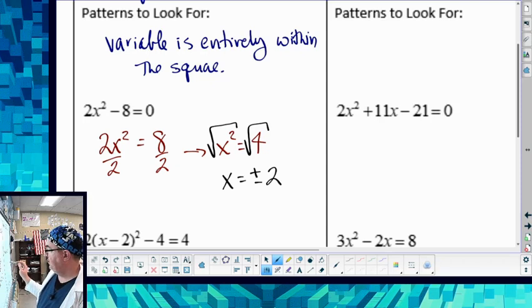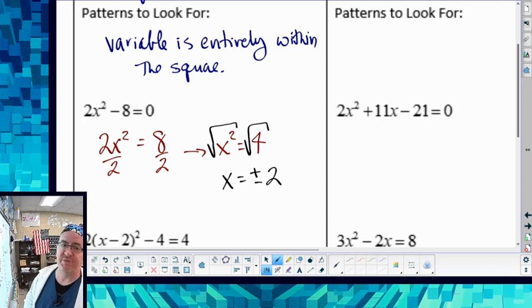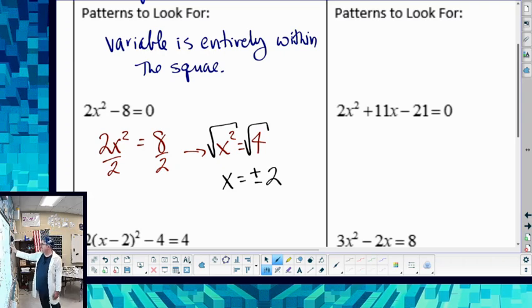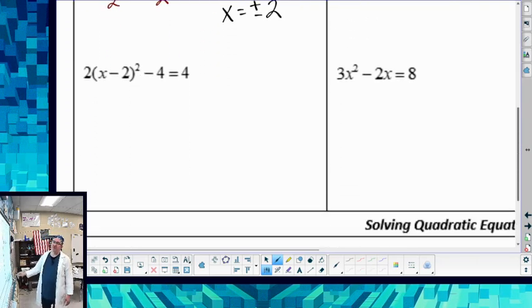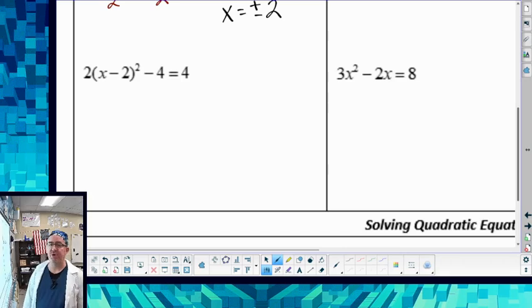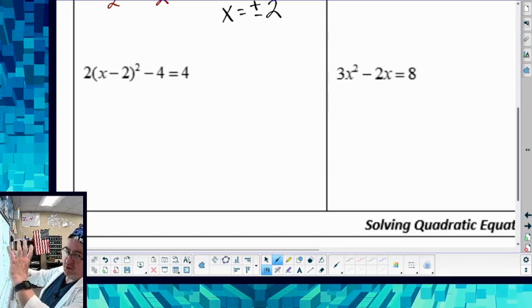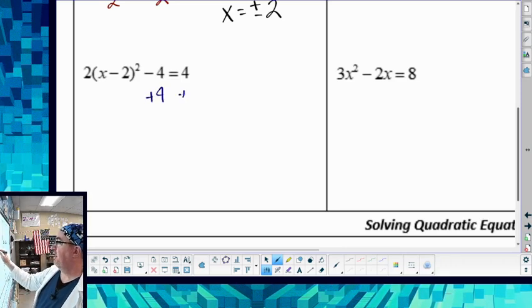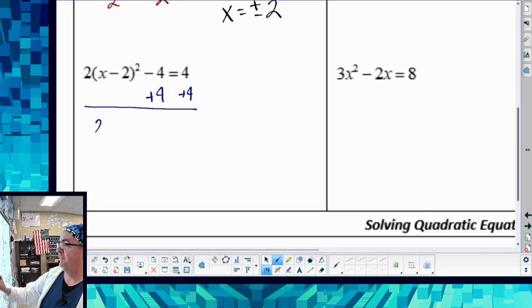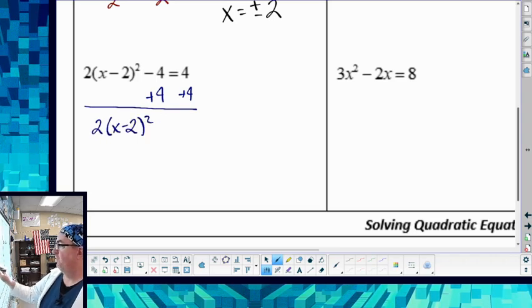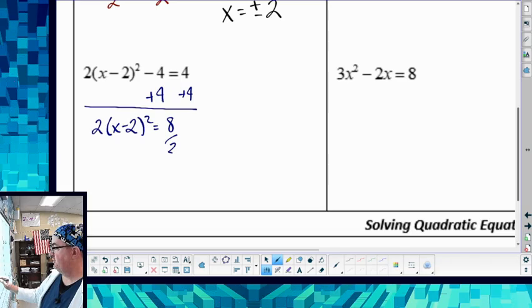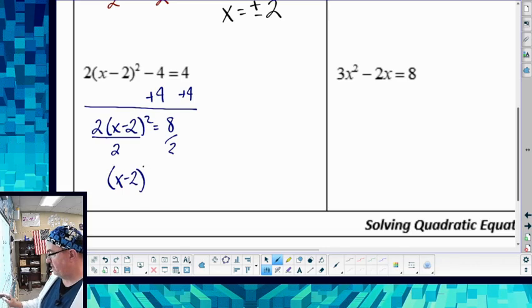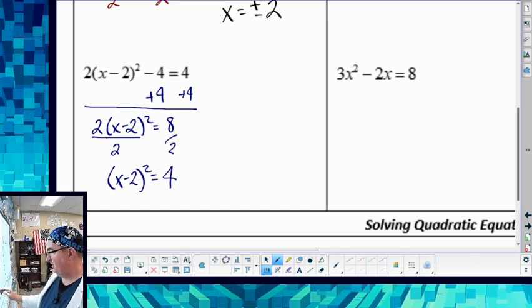Because we don't know if the number we're plugging in and squaring is positive or negative, because if it's negative, my answer is going to be positive. Now it's going to be very similar. Notice here, while the part that's being squared is binomial, all the variables are still within that squared part. So you can basically treat it the same. I'm going to add 4 to both sides. Still divide through by 2, because that's the multiplier. And now I have x minus 2 squared is equal to 4.